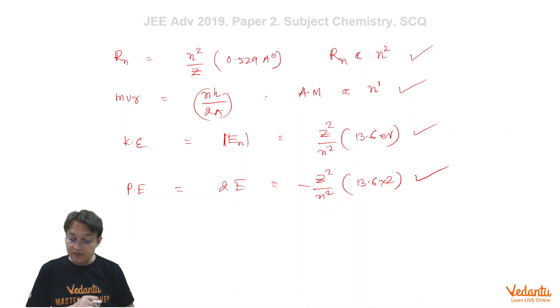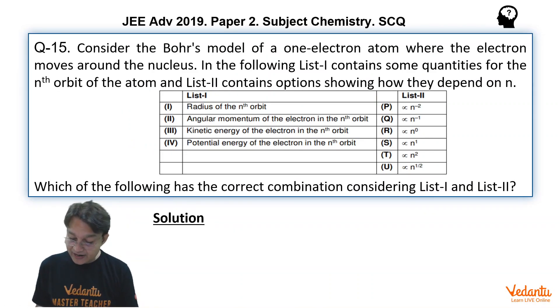Rn is proportional to n square. Angular momentum is proportional to n raised to the power 1. Kinetic energy is proportional to 1 upon n square and potential energy is also proportional to 1 upon n square. So now let's match the column.